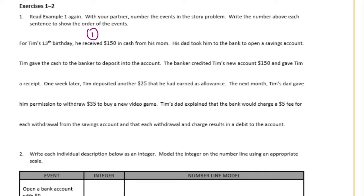His dad took him to the bank to open a savings account. So next, dad takes him to the bank to open a savings account. There's another event. Tim gave the cash to the banker to deposit into the account. So next he gives the money to the banker. The banker credited Tim's new account $150 and gave Tim a receipt.